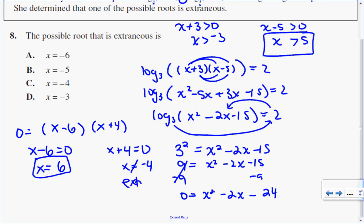They're looking for the extraneous root, which is negative 4. It's a solution to the quadratic, but not a solution to the log equation. So the extraneous root is x equal to negative 4. The answer to this question is C.